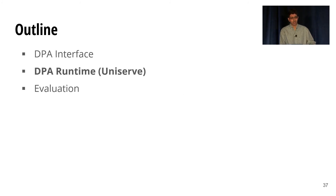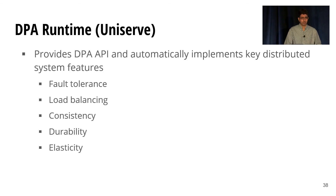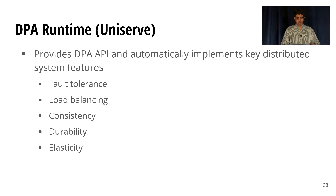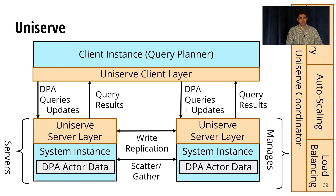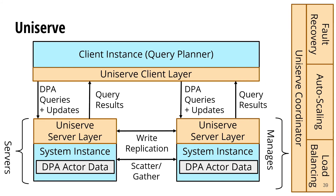Now I want to briefly touch on the common runtime, Uniserv, which actually distributes systems built with DPA. The goal of Uniserv is to distribute systems employing the DPA interface and provide them with key distributed systems features like fault tolerance, replication, consistency, and load balancing. I'll flash the architecture diagram up for you, but for more details please see the paper — we don't have time to dive deeper into this in this talk.